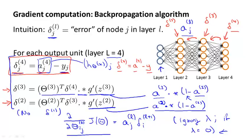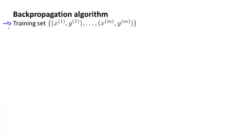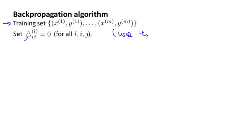Let's put it all together to talk about how to implement backpropagation to compute derivatives with respect to your parameters, and for the case of when we have a large training set, not just a training set of one example. Suppose we have a training set of m examples. The first thing we're going to do is set capital delta superscript l subscript ij — that triangle symbol is capital delta, while the previous slide used lowercase delta — equal to zero for all values of l, i, and j. Eventually, these capital delta terms will be used to compute the partial derivative of J of theta with respect to theta l subscript ij, and they serve as accumulators.